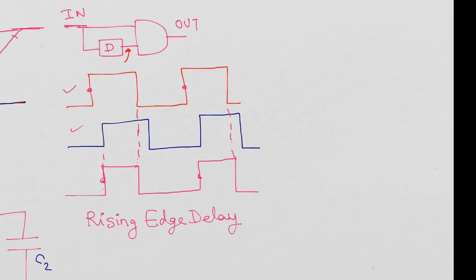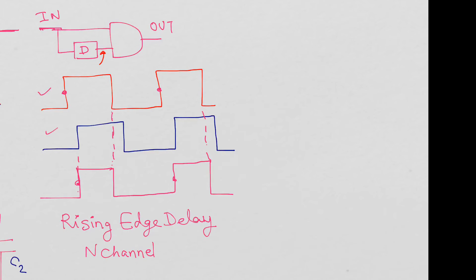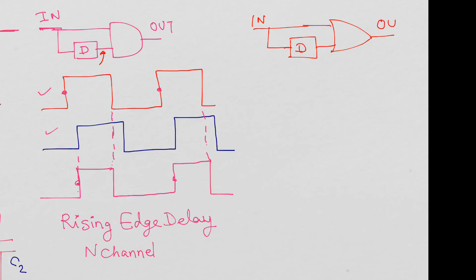Now how do we introduce a falling edge delay? For a falling edge delay, we take the input and again add a delay cell with the same delay D. Then we feed these two signals to an OR gate instead of an AND gate. So this output is Out 1 from the AND gate, and this new output we call Out 2.